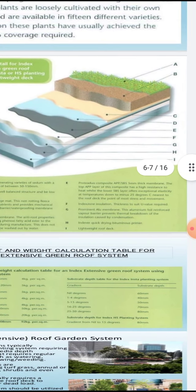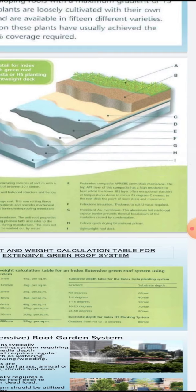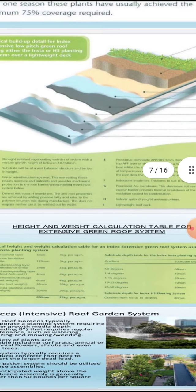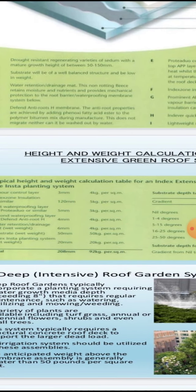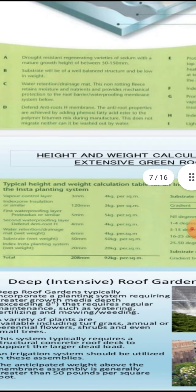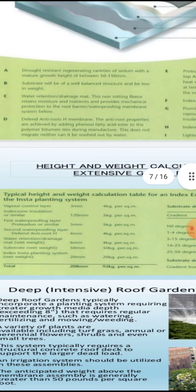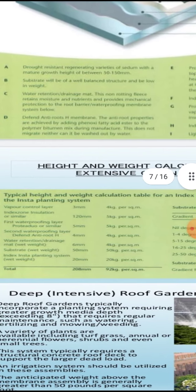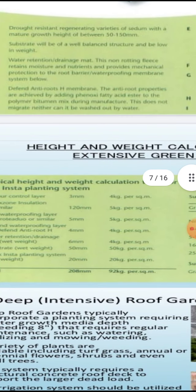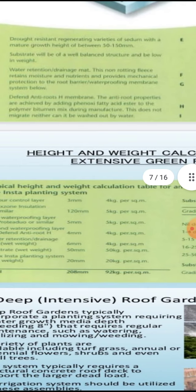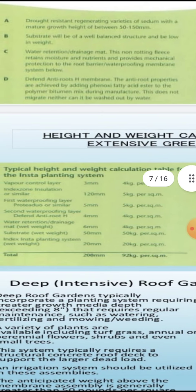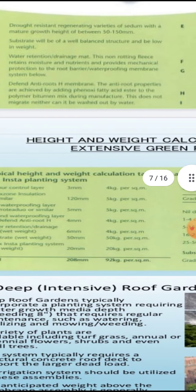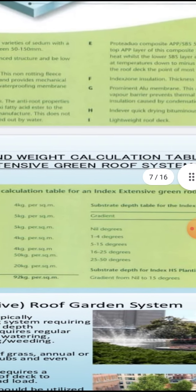The levels are labeled A, B, C, D, E, F, G, H, I. 'A' is for drought-resistant varieties at the top. 'B' is the substrate — well-balanced and low in weight. 'C' is for water retention, with non-deep-rooted plants selected. 'D' has anti-root membranes used, and certain plants are selected accordingly.